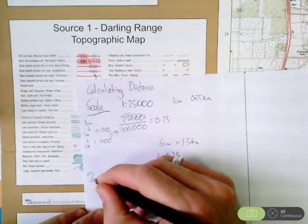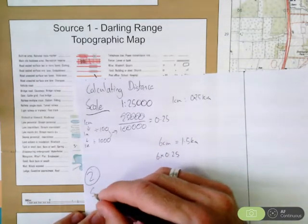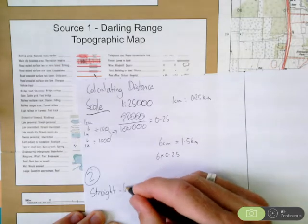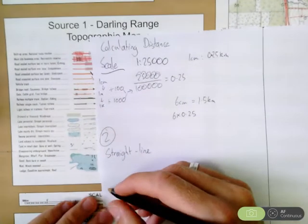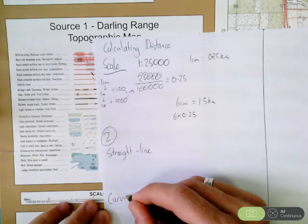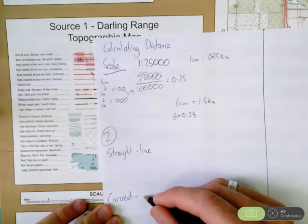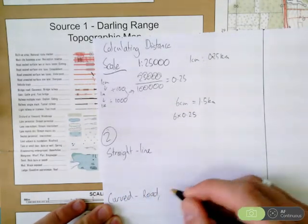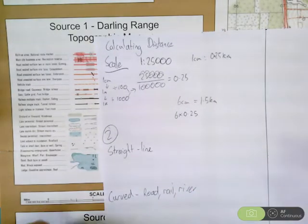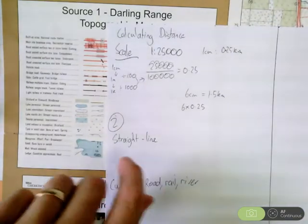There's two things that you can do. There's the straight line distance, and there's the curved. This can be a road, a railway, it can be a river, anything that doesn't follow an exact straight line.